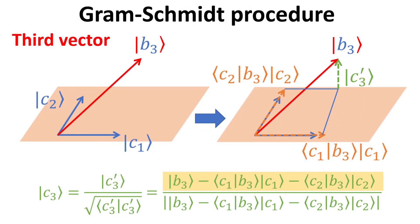Now, we have the vectors C1 and C2, which are orthogonal to each other and normalized. These two vectors span the orange 2D plane as shown. Next, we want to generate the third vector C3 from the vector B3.